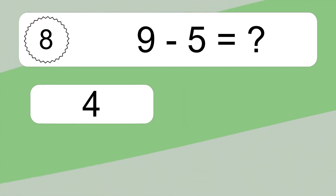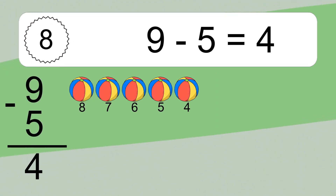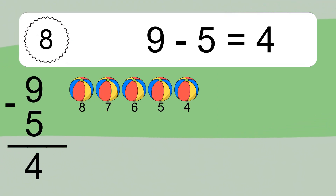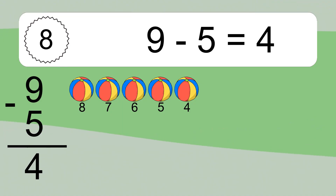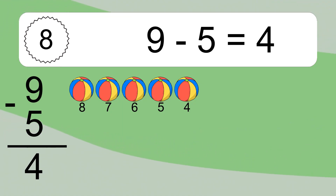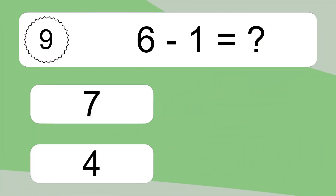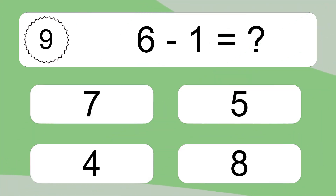9 minus 5 equals what? 9 minus 5 equals 4. Let's count it: 8, 7, 6, 5, 4.